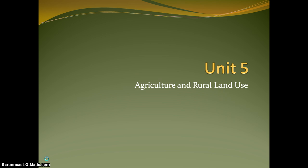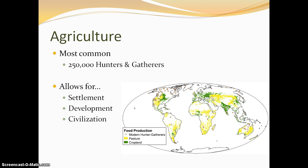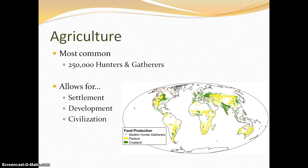As we begin our unit and our discussion on agriculture, the first thing we'll come to is the discussion on how important agriculture really is. Agriculture is the most common form used in our world today for people getting their food — this is the most common way people are going to grow and get their food for consumption. Agriculture comes after the development of hunter-gatherer societies. Hunter-gatherer societies are much more inefficient; it's much more difficult to get consistent food supplies. Agriculture all around is just a much better method for many different reasons.